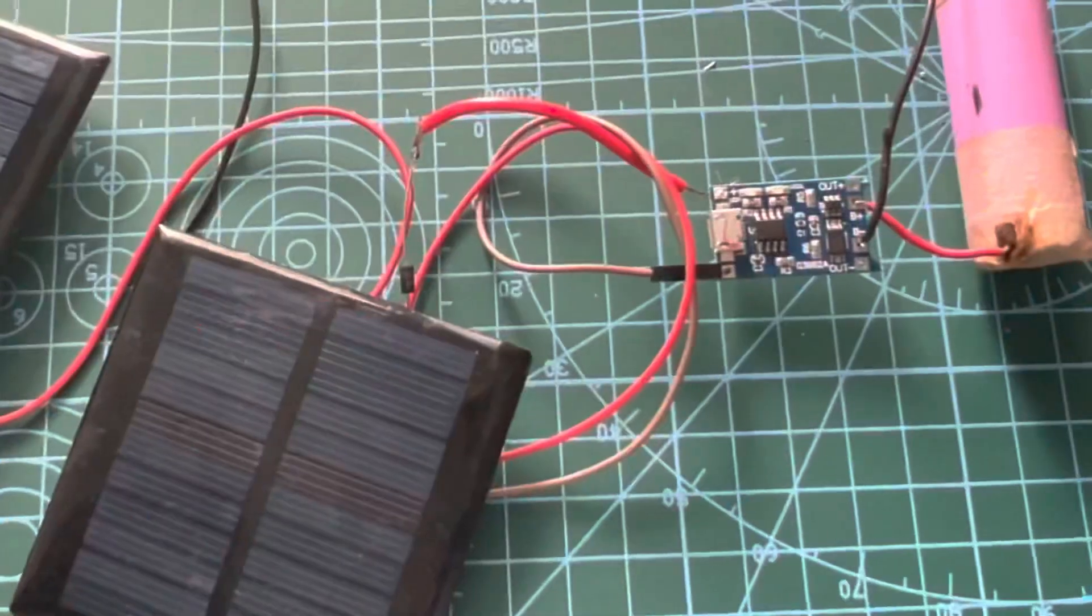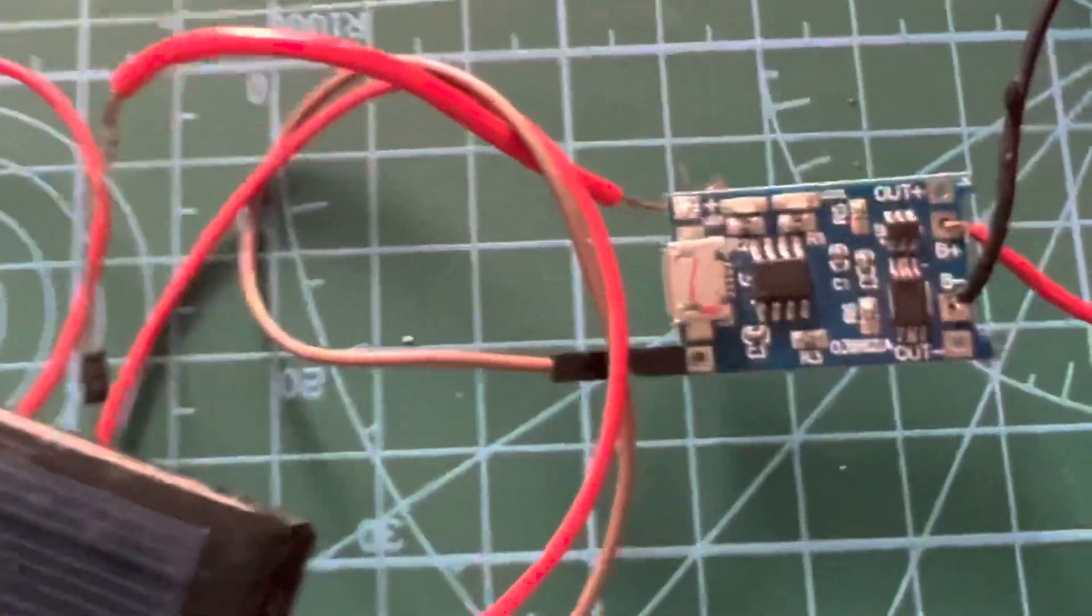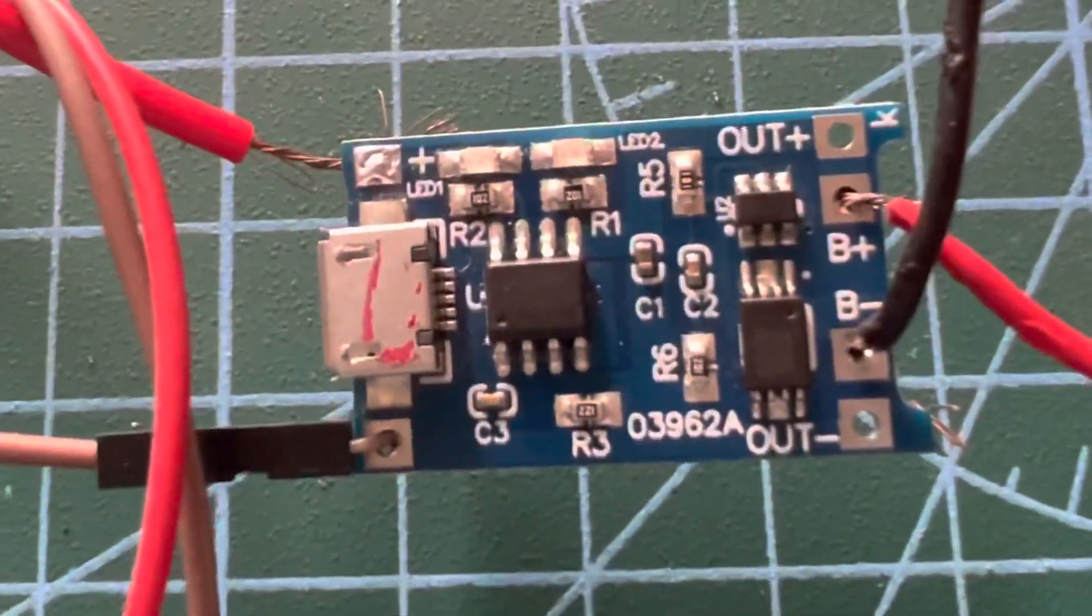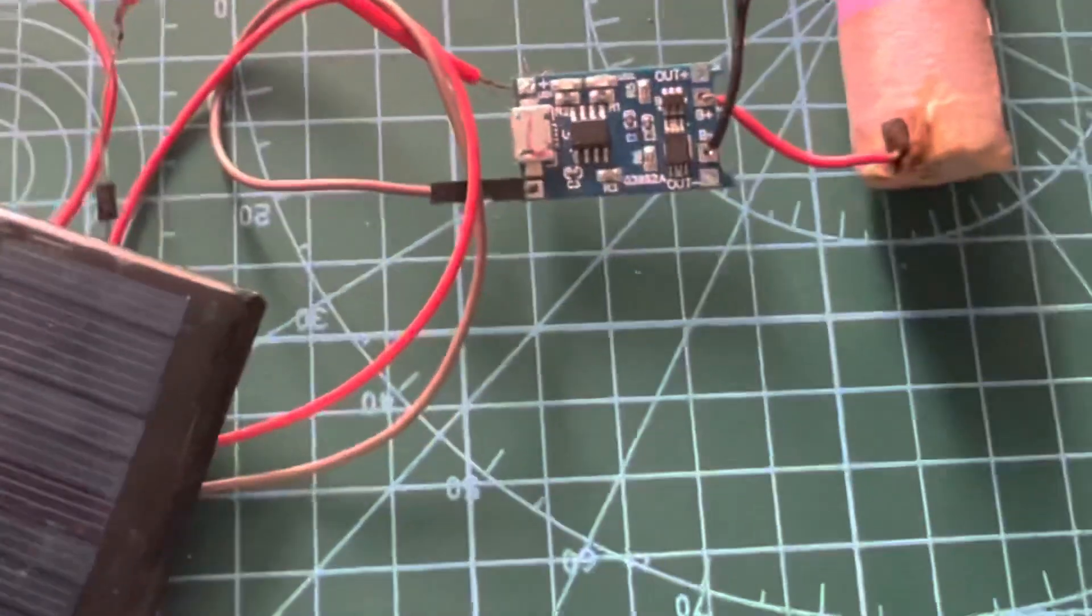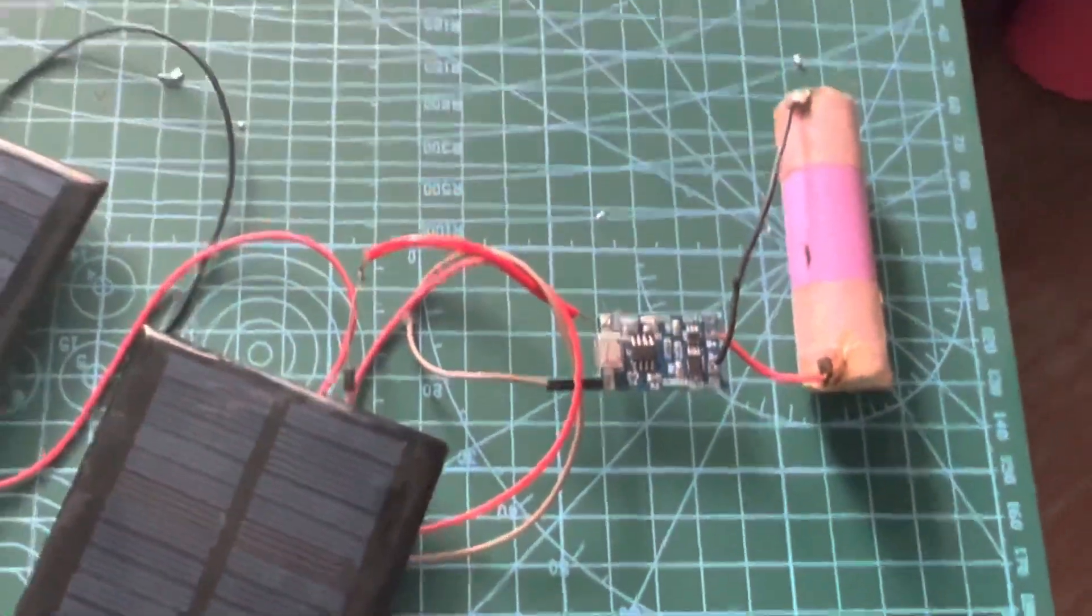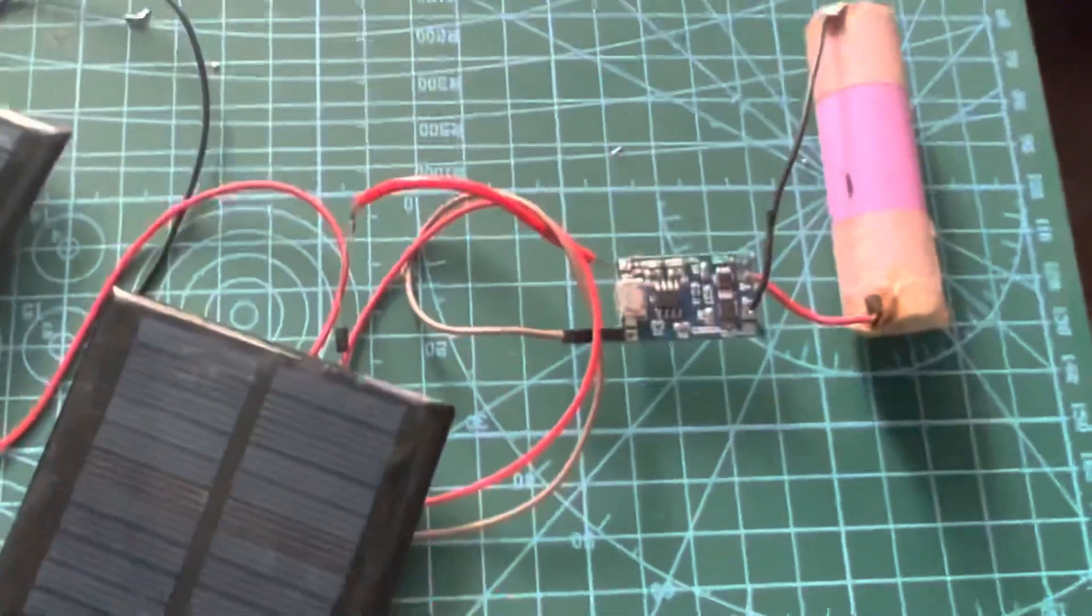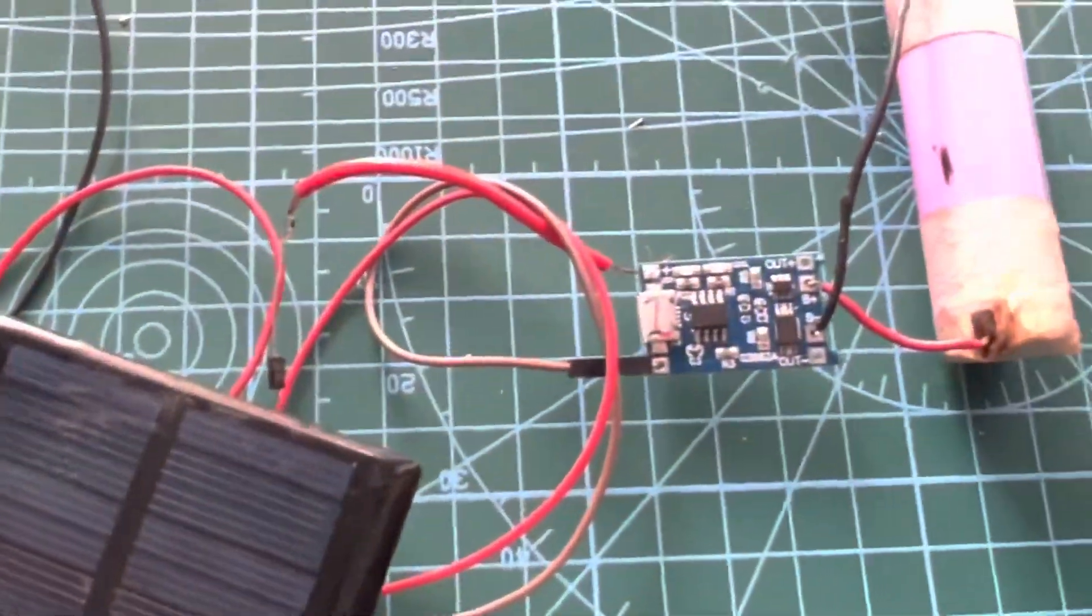Currently this TP4056 charging module has no LED lights glowing on it since there is no sunlight on the solar panels. As soon as we take it out under the sun, when sunlight falls on the solar panel, it'll start glowing its light. Let's test it.